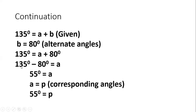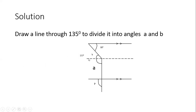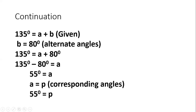So angle a is 55 degrees. Now, angle a and angle p are corresponding angles — both left-side-down. So a equals p, meaning p equals 55 degrees. That is our answer for angle p.